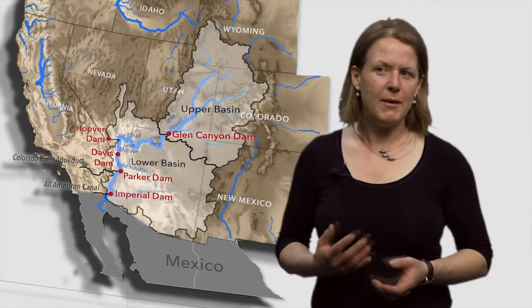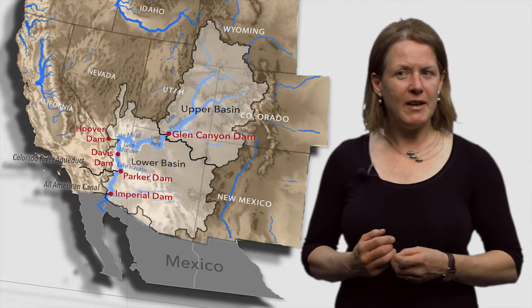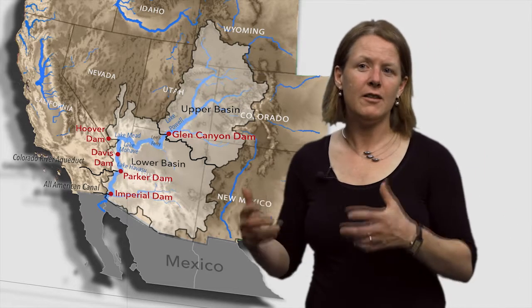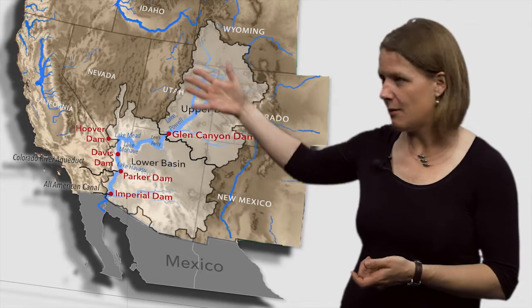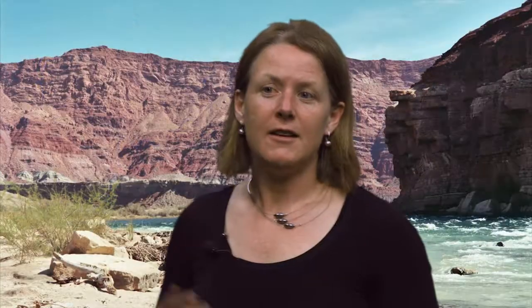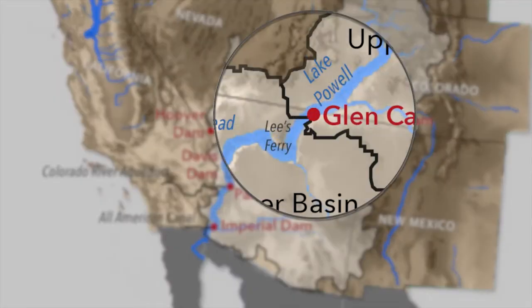For water management purposes, the Colorado River Basin is divided into an upper basin and a lower basin. The dividing line between the two basins runs through Lees Ferry, an important river crossing point since the mid-1800s, just downstream from Lake Powell. Lees Ferry is the accounting point at which the main allocation of the river's flow between the upper and lower basin is measured.